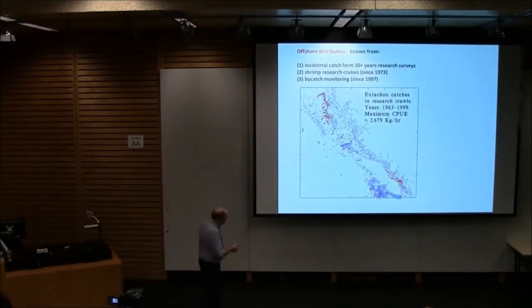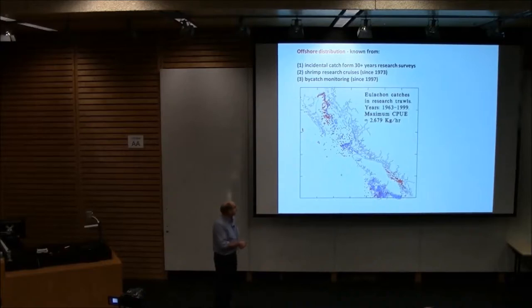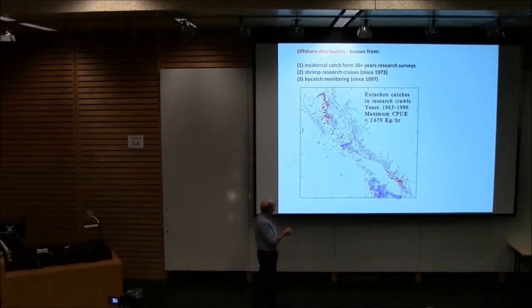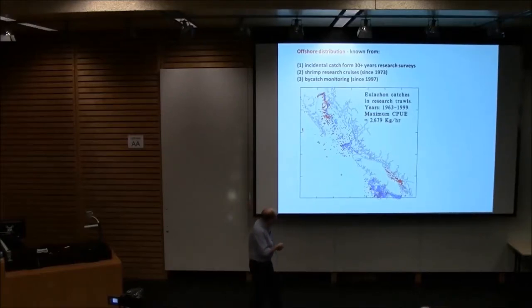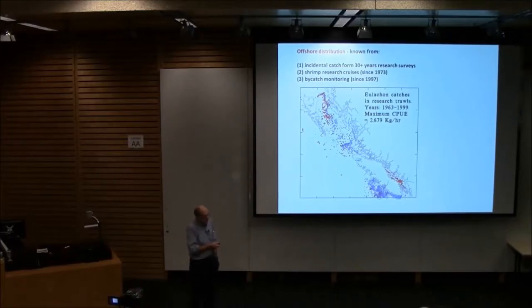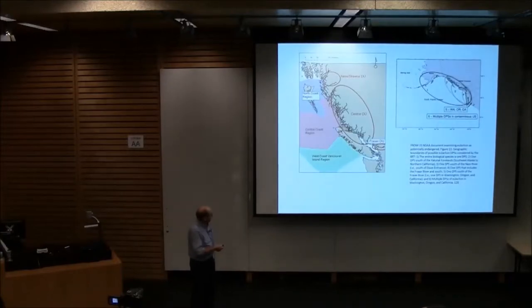This is where eulachons are found to a certain extent offshore. The red dots indicate research sets where they're not found. The blue dots indicate research sets where they are found, and they are found usually on the shelf waters, right on the break, around a hundred meter edge or so. These are all research catches. The biggest areas are found off the lower west coast of Vancouver Island. This is where there's been a shrimp trawl fishery. The bycatch of eulachons in the shrimp trawl has been a big factor, prominent in the understanding of eulachons, but it might not be related to their apparent decline.